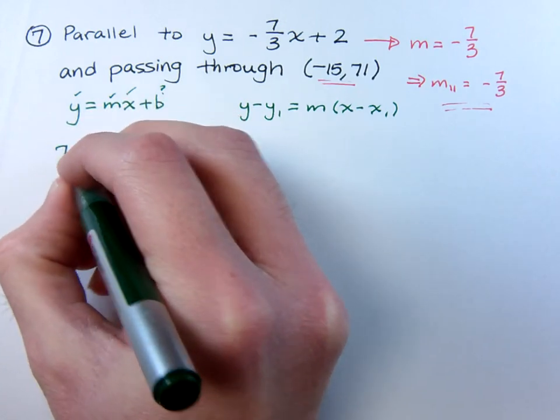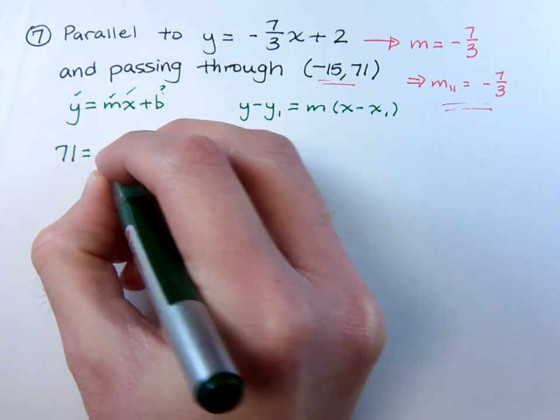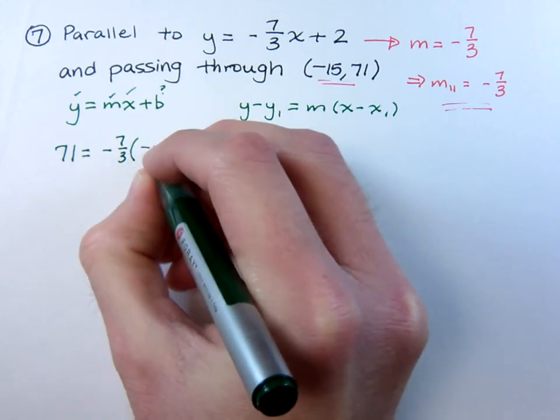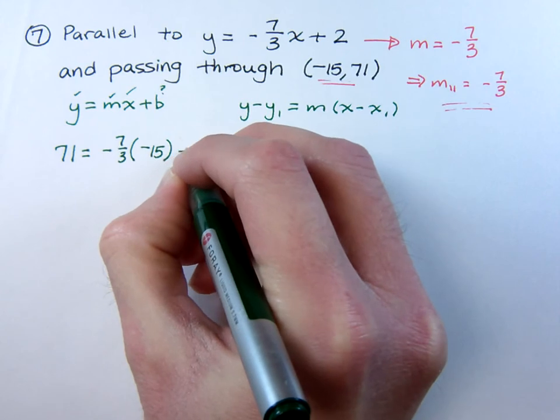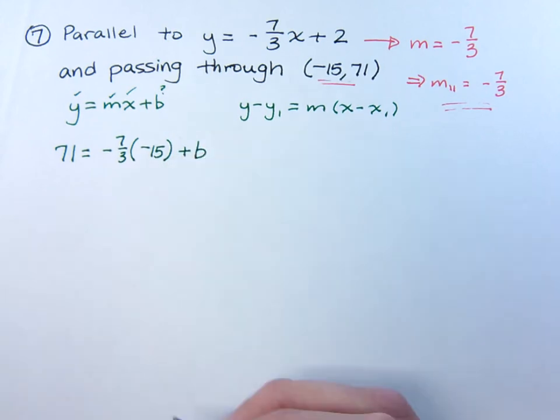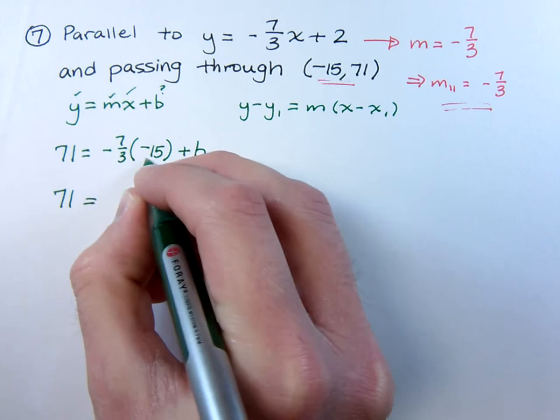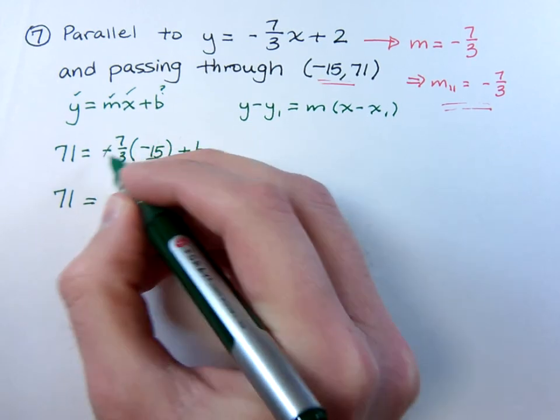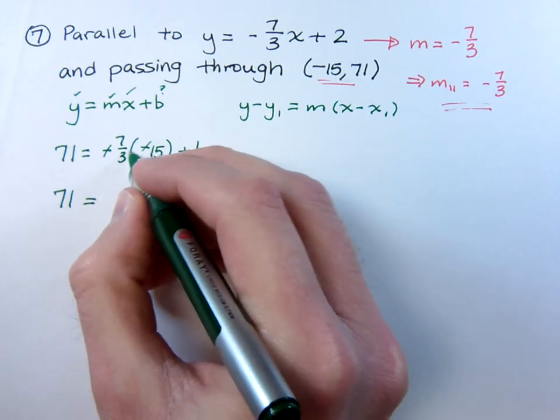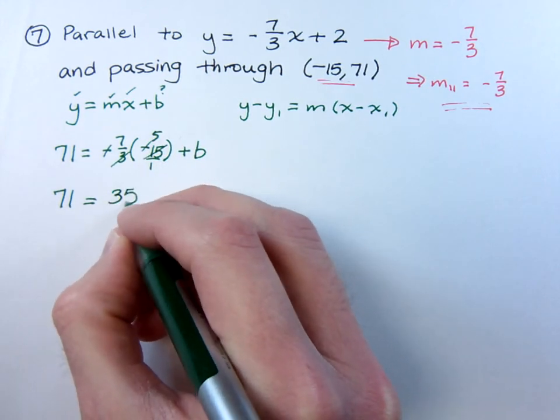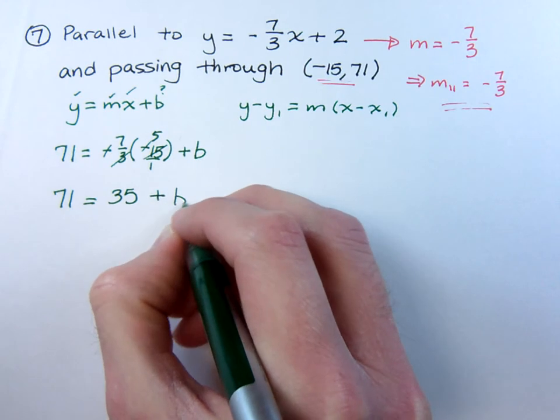So y is going to be 71, your slope is negative 7 thirds times your x, which is negative 15, and then plus b. Remember, this is only going to get you the y coordinate of the y intercept. So 71 is equal to, of course working with fractions, no big deal. Cancel the negatives, 3 goes into 15 five times. So 71 is equal to 35 plus b.